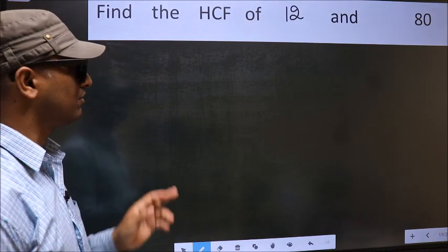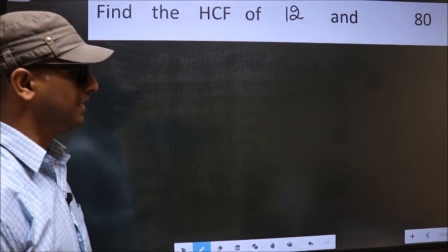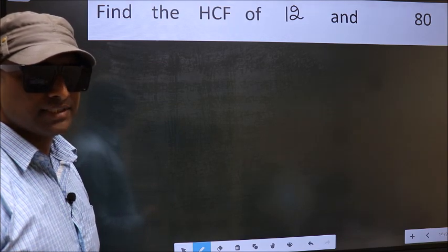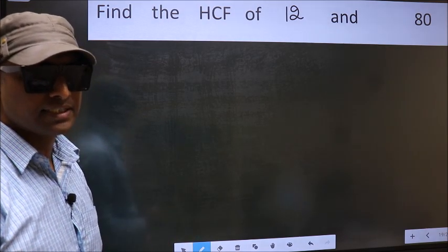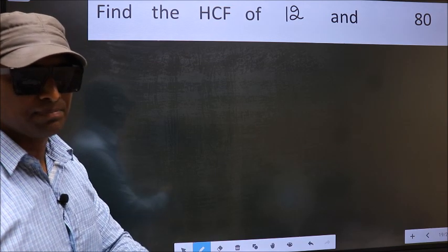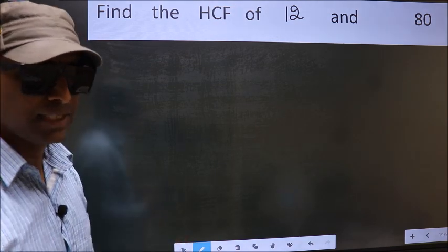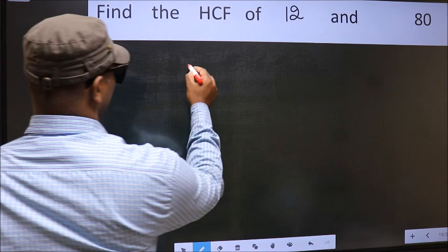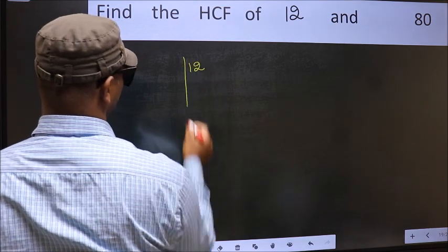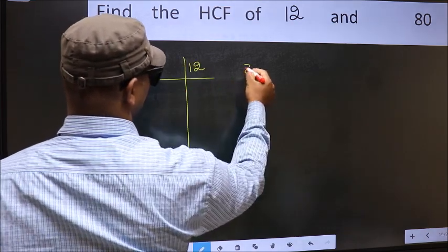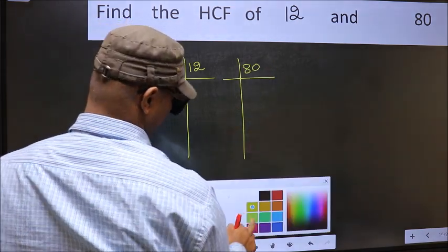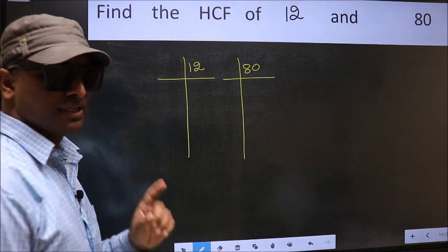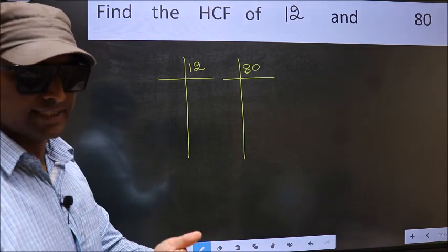Find the HCF of 12 and 80. To find the HCF, we should do the prime factorization of each number separately. What I mean is 12 and 80. This is your step one. Next.